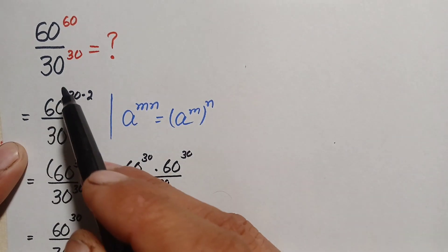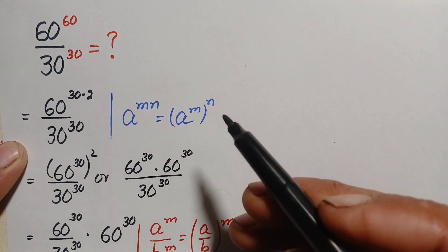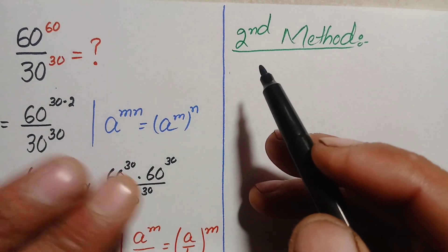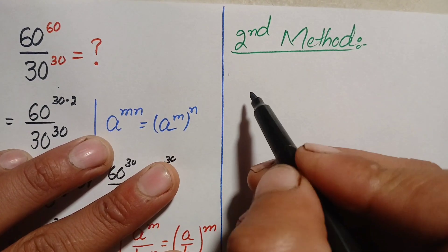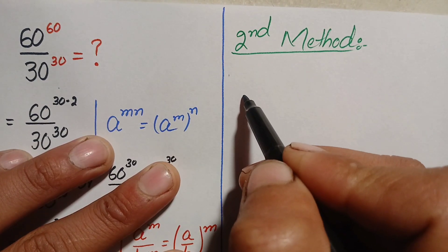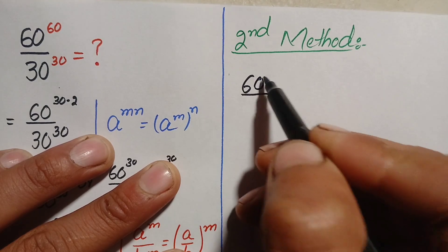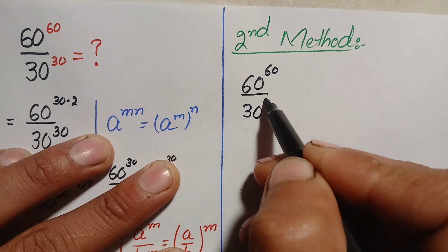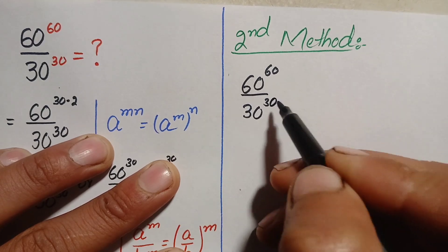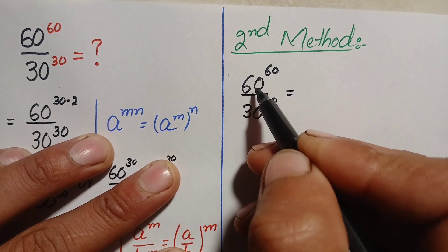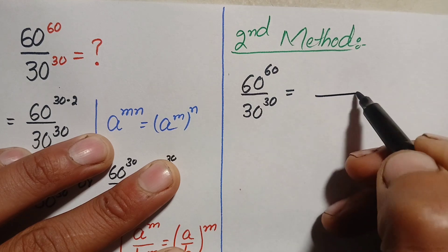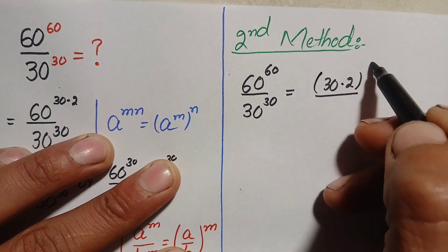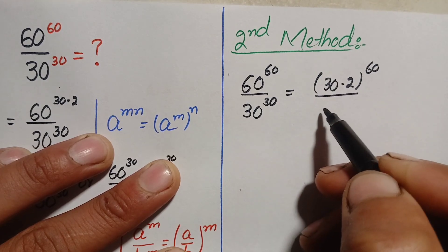Now we solve this problem using the second method. We write the problem again: 60 raised to power 60 divided by 30 raised to power 30. We factorize the base and write 60 as 30 times 2, giving us (30 times 2) whole raised to power 60, divided by 30 raised to power 30.